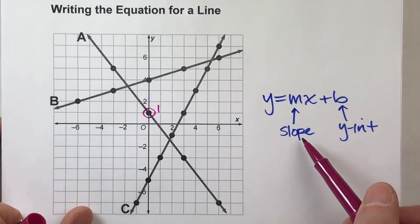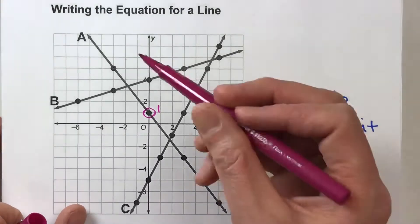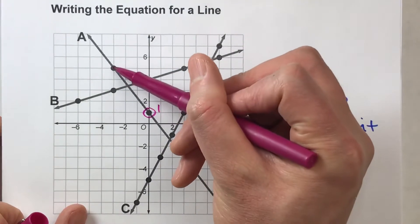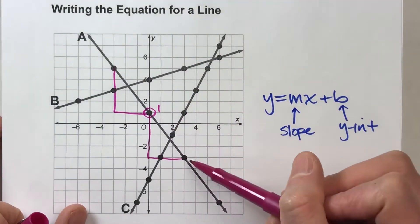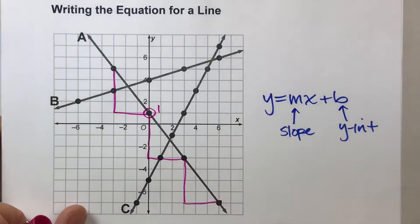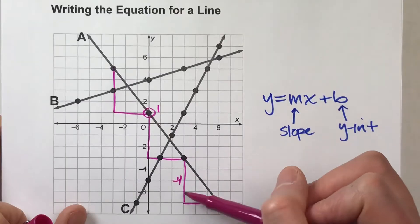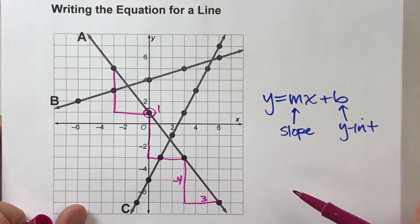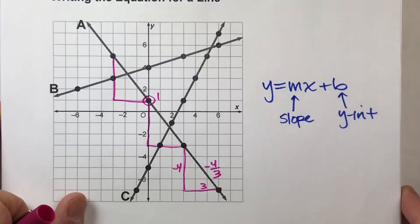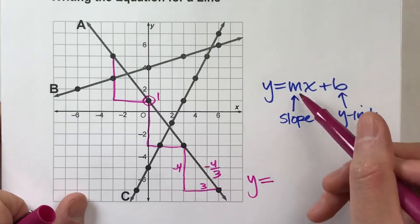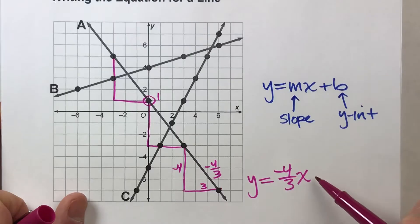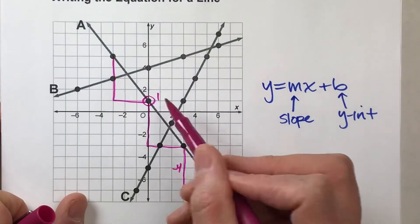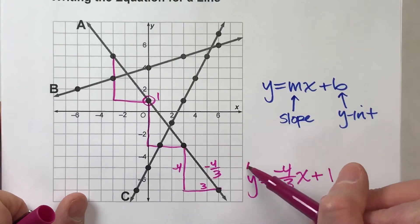For the slope, I need to pick two points and find the rise and the run — the pattern from one point to the next. Notice from here, I'm going down, right, down, right, down, right — the same pattern over and over. It's going down 4 and to the right 3, so my slope is negative 4 over 3. We now have enough information to write an equation for line A: y equals negative 4 over 3x plus 1.